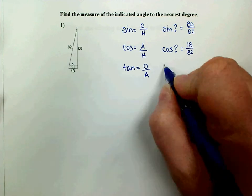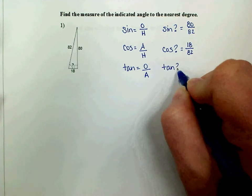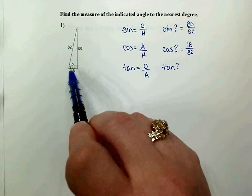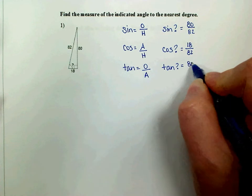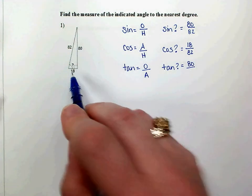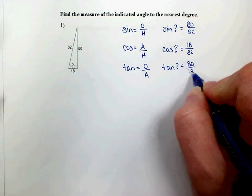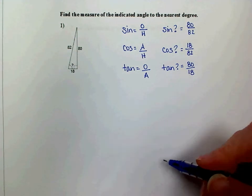If we were using tangent, the tangent of our angle is opposite over adjacent. So the opposite side is 80. The adjacent side to our angle is the 18. So any of these will give us the same answer.